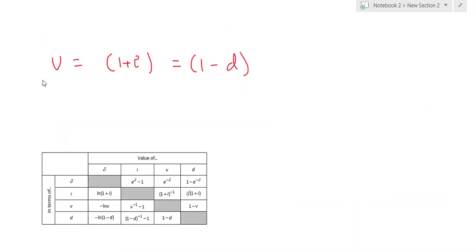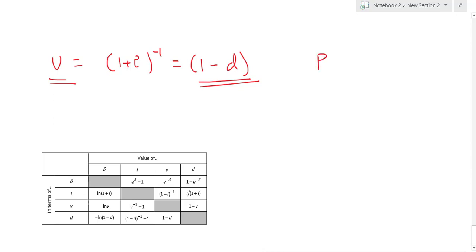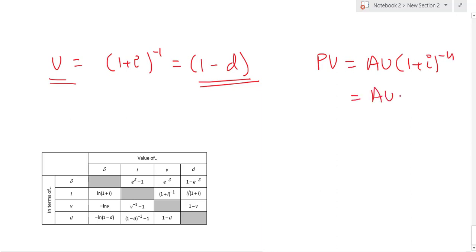One important notation to remember: (1 + i)^(−1), which is 1/(1 + i), can be written as v, which is also the same as (1 − d). So when discounting using the compound annual interest rate, PV equals the accumulated value times (1 + i)^(−n), which can also be written as the accumulated value times v^n. Here v is just the reciprocal of (1 + i).